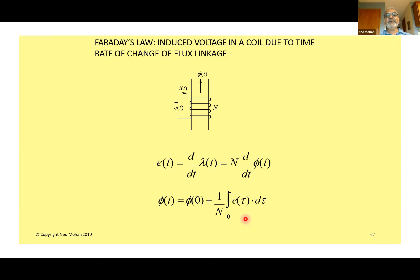Regarding Faraday's law: e = dλ/dt — the sign question is clarified by defining a voltage, winding orientation, and assumed current direction into the positive terminal. The flux is in the vertical direction, and Caraday's law gives N·dΦ/dt with a positive sign given the direction of flux and the polarity of rotation. This flux may be generated by another coil on another limb. We can similarly talk about transformers as coupled coils.